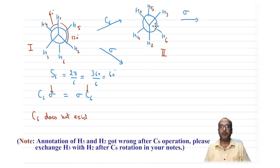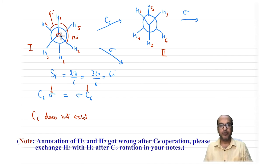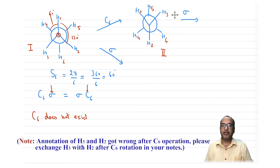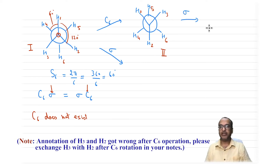The σ plane must be perpendicular to the C6 axis. The C6 axis passes through the two carbons, drawn here as a circle with a dot. So σ is the plane of the board, meaning whatever is in front goes to the back and vice versa. Therefore H1, H2, H3 go to the back, and H4, H5, H6 come forward.